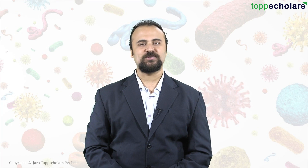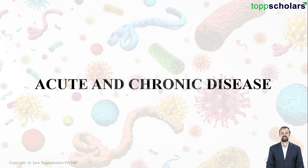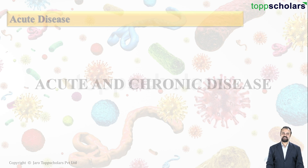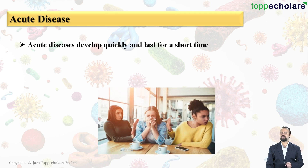Hello students and welcome to Top Scholars. Today we will be talking about another very interesting topic — acute and chronic disease. Let us first turn our attention to the first type of disease, that is acute disease. You must be thinking: what exactly is meant by an acute disease?